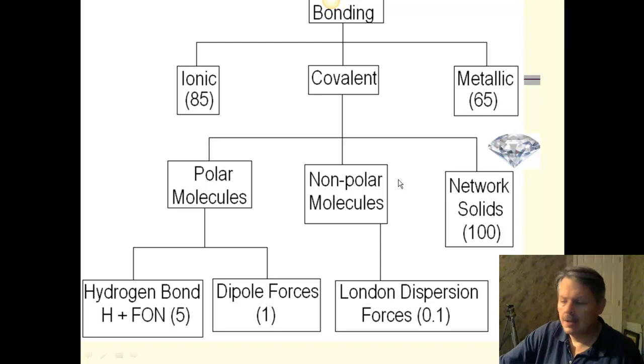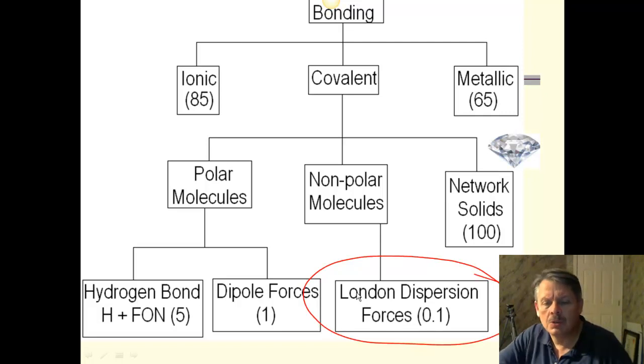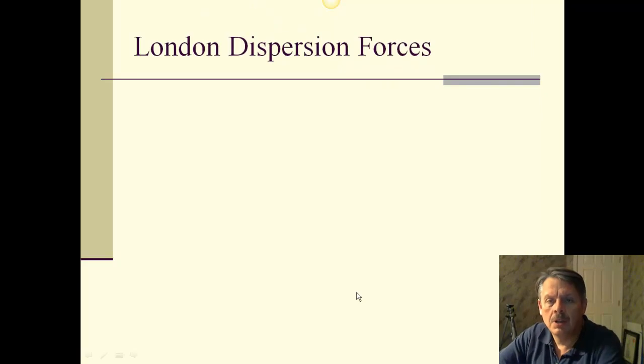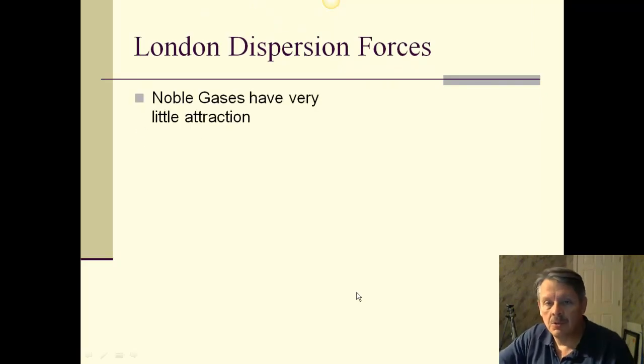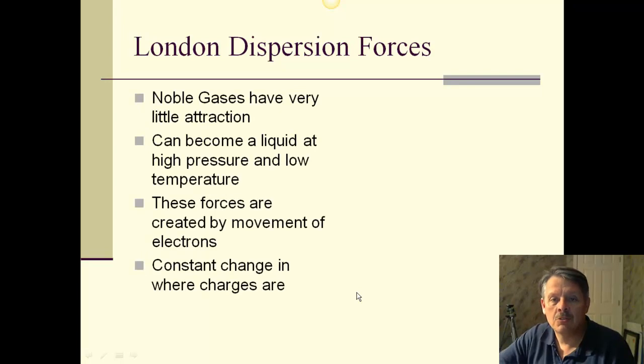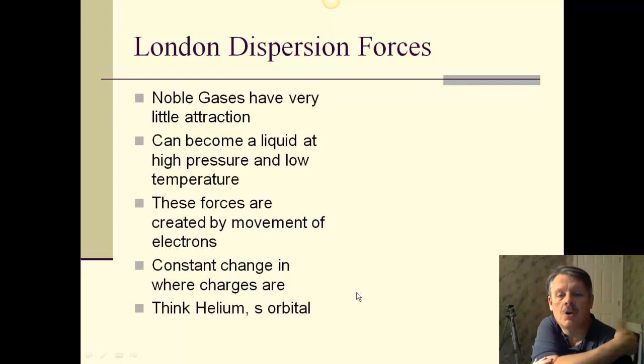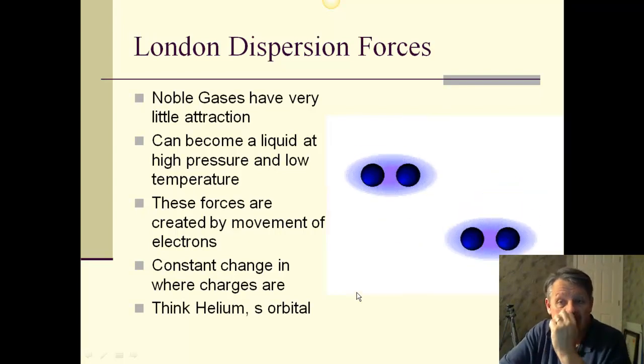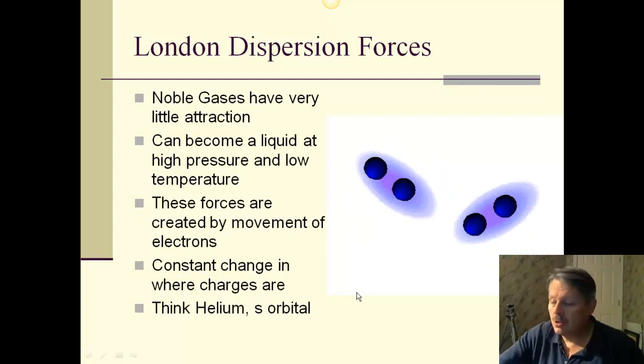All right. So, all we have left are these strange ones down here called London dispersion forces. What in the world are London dispersion forces? Well, London dispersion forces are things like noble gases. Noble gases have very little attraction to each other. They can only become a liquid under very high pressure and very low temperature. These forces are created simply by the movement of electrons, and there has to be constant change in where the charges are. You can think helium. It has an s orbital. You can think of something like H2. So, let's look at H2. This is a good example.